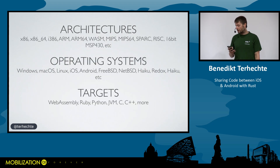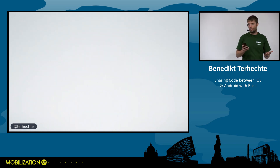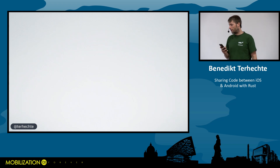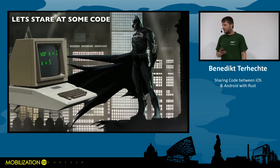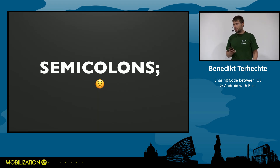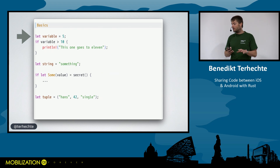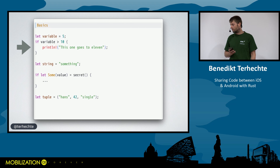Rust runs on a ton of architectures and operating systems, but we're focusing on Android and iOS today. Looking at some code: Rust has semicolons, which is sad news if you write Swift or Kotlin. Basic Rust looks a lot like Swift — you have let bindings, if statements, if let for optionals, and tuple types. Functions look similar too, with parameters and a return type declared at the end.